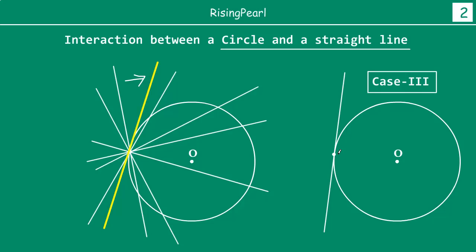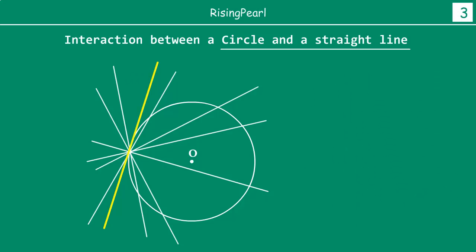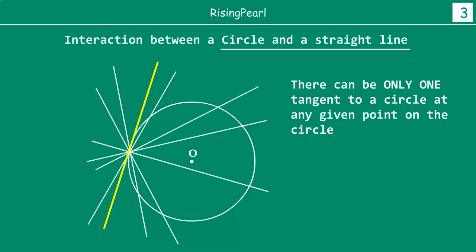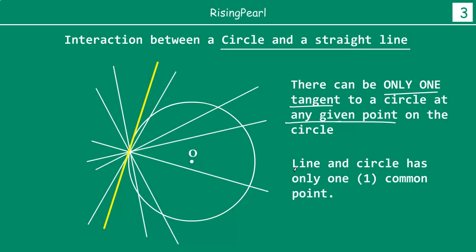That means if you take any point on the circle — let's call it A — at this point there can be only one line, only line L, that will just touch the circle. You cannot draw any other tangent. We know that line L which touches the circle at a point is called a tangent. So at this point you cannot draw any other tangent. There can be only one tangent to a circle at any given point on the circle. We cannot have more than one tangent, and the line and the circle will have only one common point, which is of course the point on the circle.